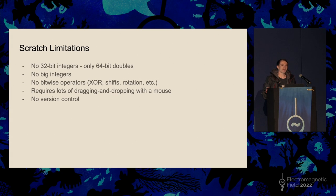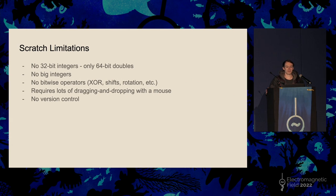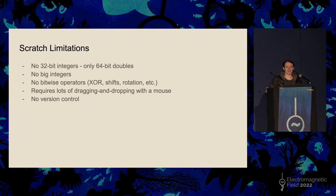Scratch, although in theory it can do anything because it's Turing complete, has quite a lot of limitations when it comes to implementing cryptography. All numbers in Scratch, because it runs on JavaScript under the hood, are 64-bit double precision floats — not 32-bit integers, so we can't just drop in the algorithm. It also lacks XOR and rotation, which might sound like a problem. And of course you've got to use your mouse — making long scripts gets very tiring with all the dragging. There's also no version control, which makes me feel like I'm about to lose all my changes at any point.